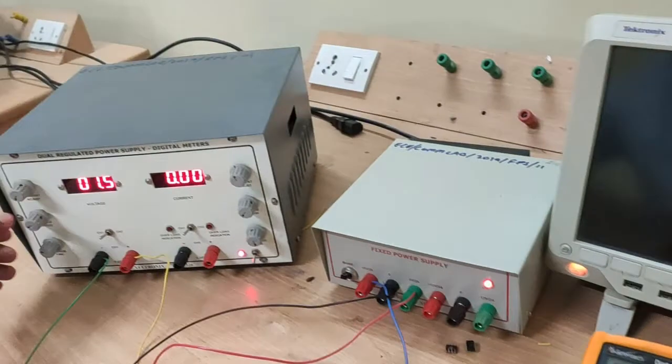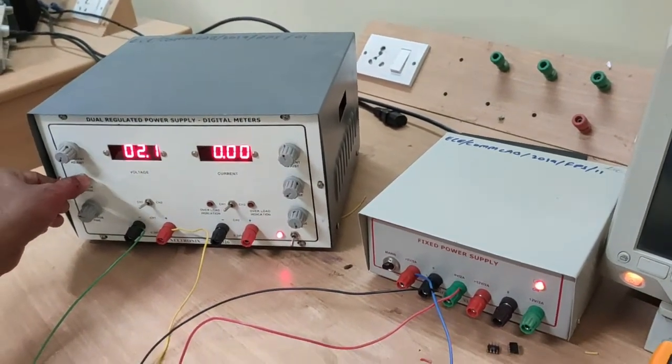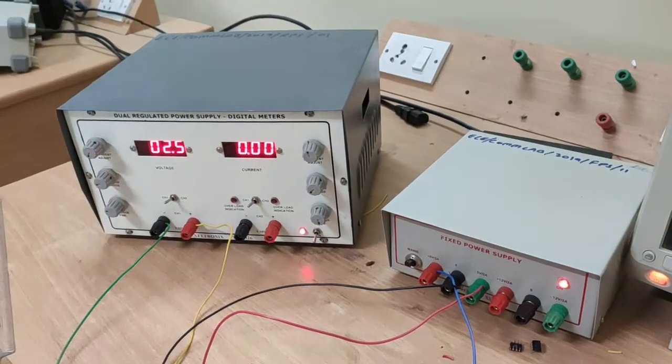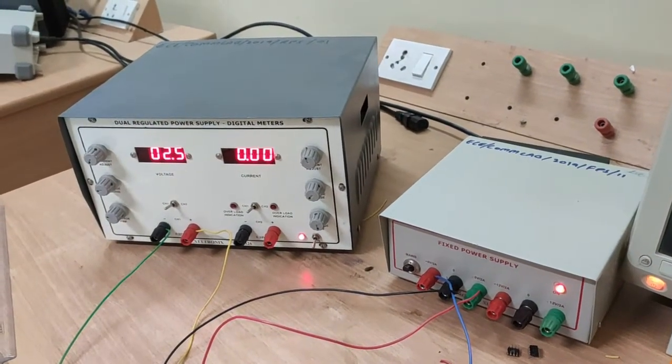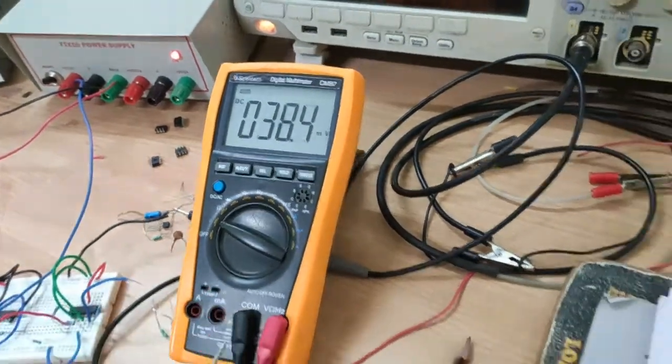Next, increase the V in value up to 2.5 volts. V01 is minus 2 volts and V02 is 2 volts.